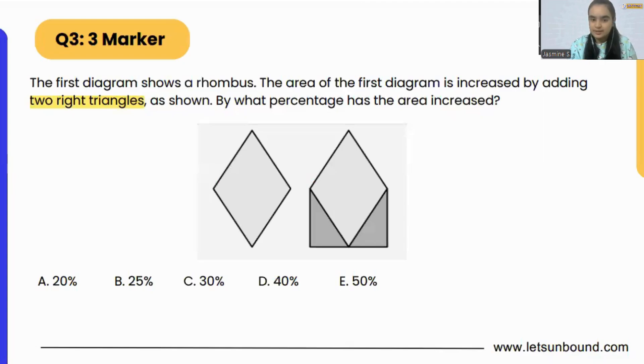What we can do here is this is the rhombus and then they have attached two right triangles to it. So what we can do is let me split the rhombus into four identical triangles: first, second, third, and fourth.